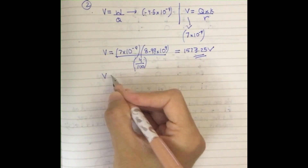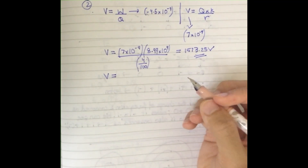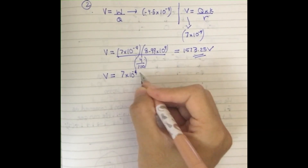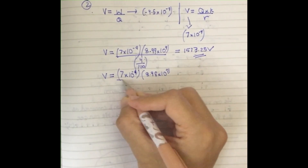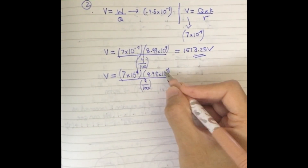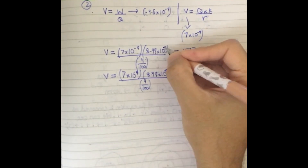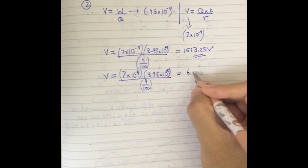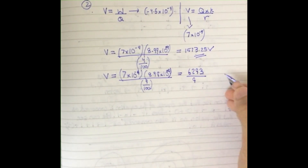Now we calculate the electric potential at 9 centimeters — when the charge is at the 9 centimeter position. We do the same thing, just changing the distance to 9/100 meters because we must convert centimeters to meters. The result is 6293/9, written as a fraction to keep it accurate for later calculations.